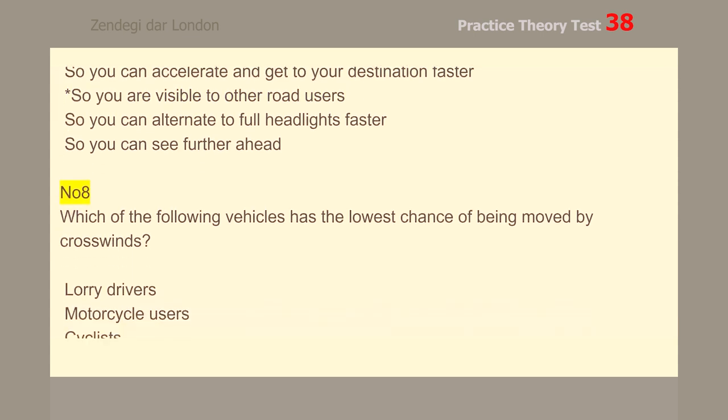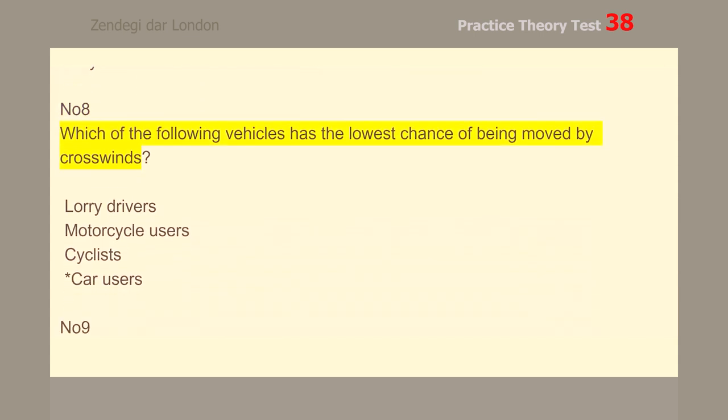Number 8. Which of the following vehicles has the lowest chance of being moved by crosswinds? Car users.